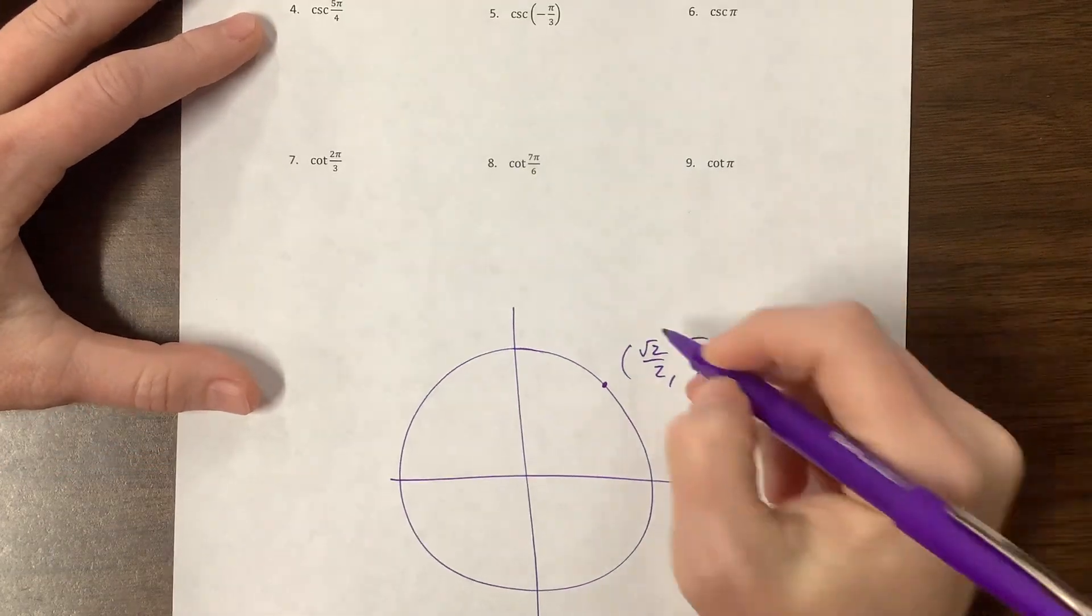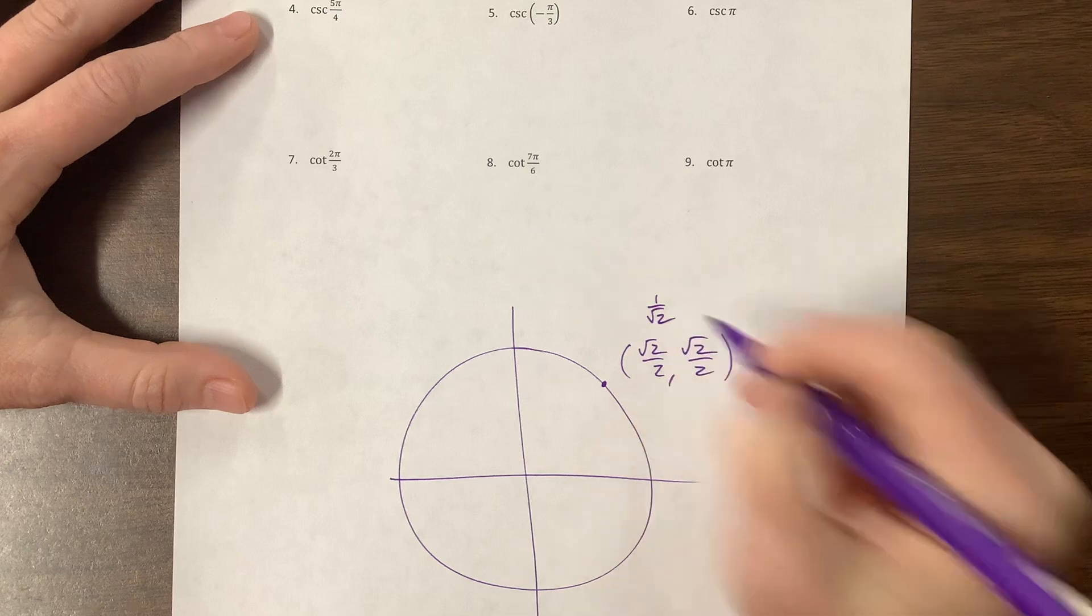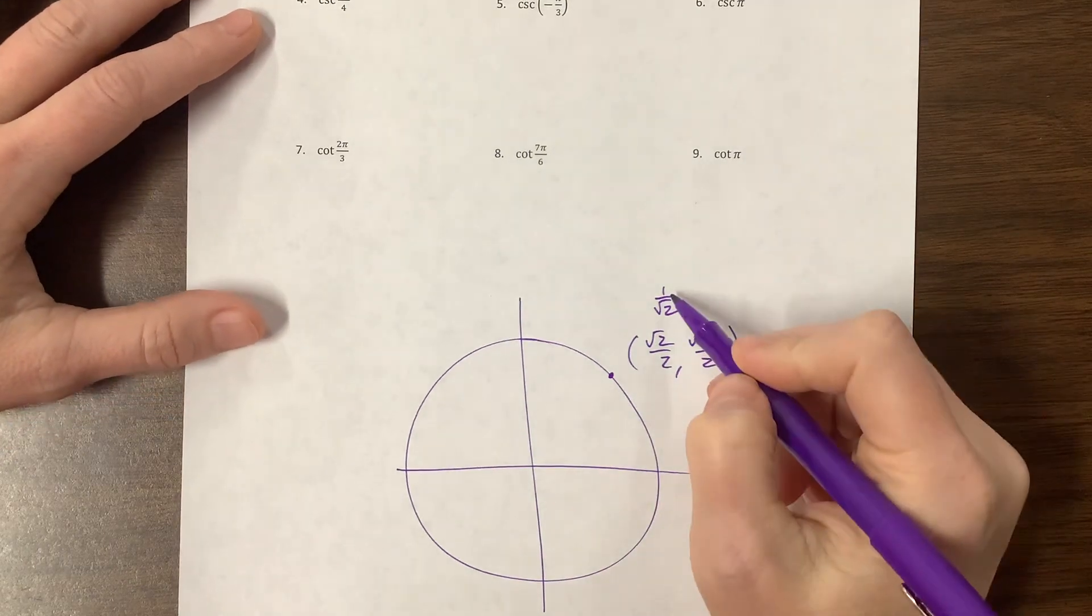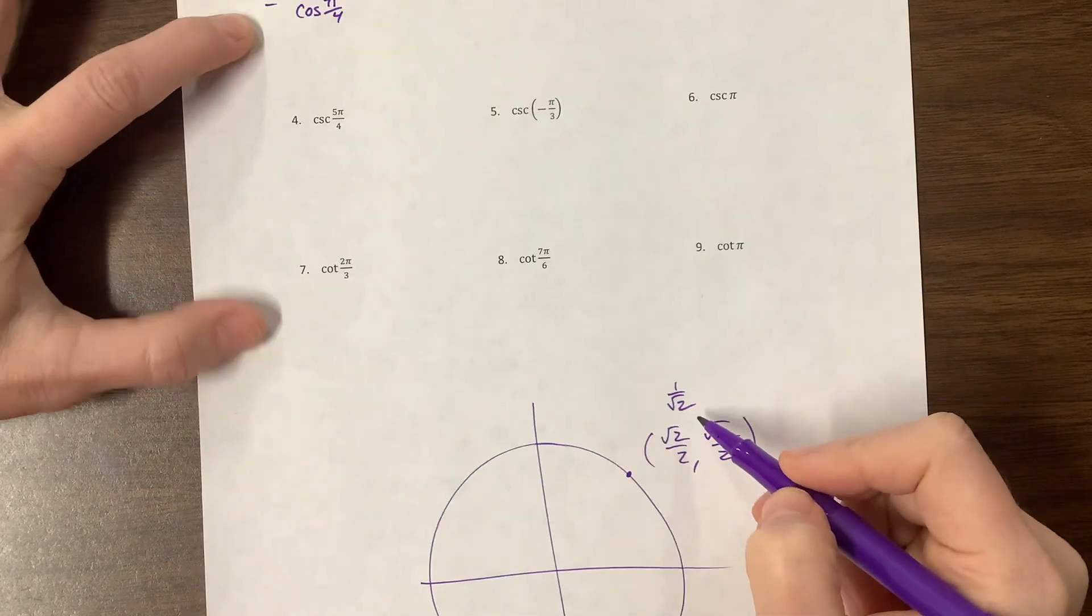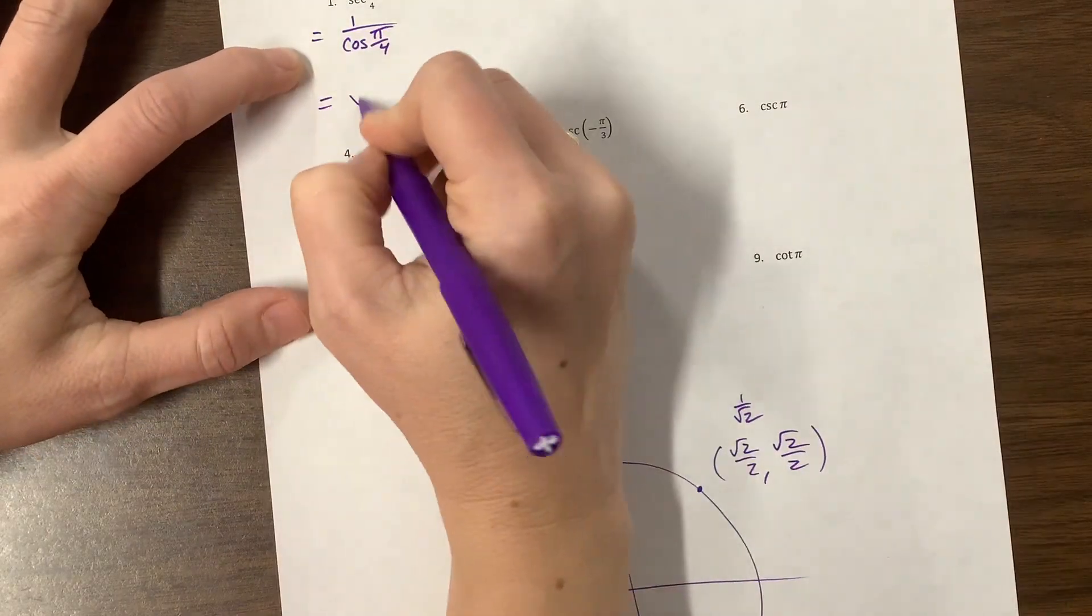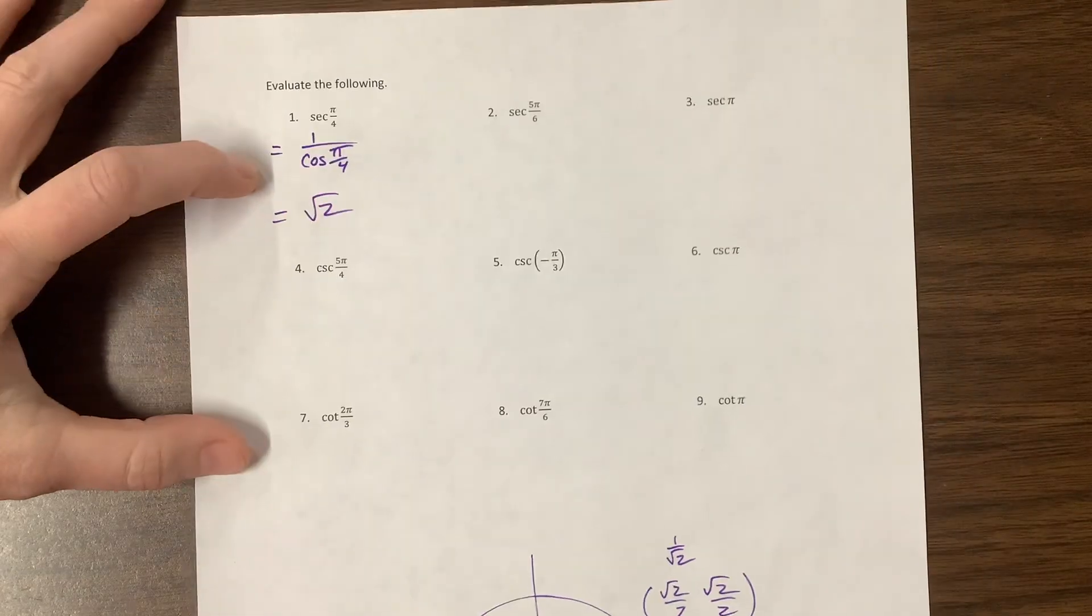By the way, this is also 1 over root 2. So we had to rationalize this to get to that. You multiply by root 2 over root 2, and you get here. So now I want the reciprocal of that, and that's just going to be equal to root 2. Cool?